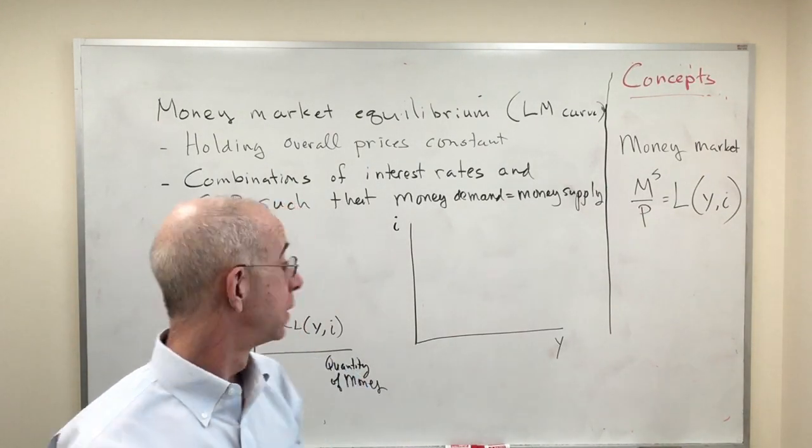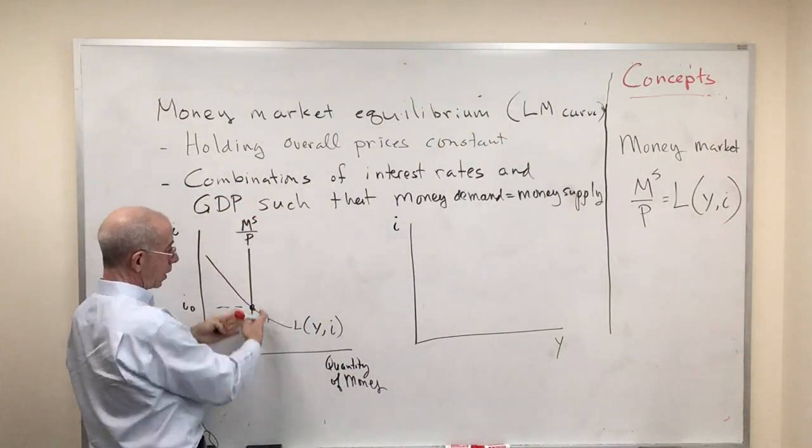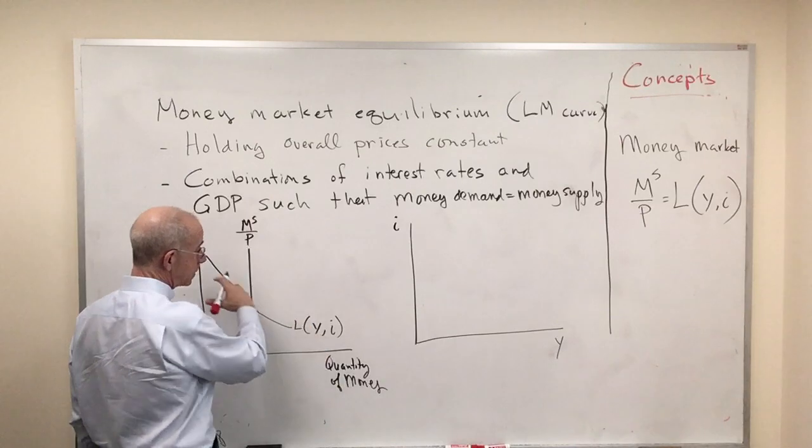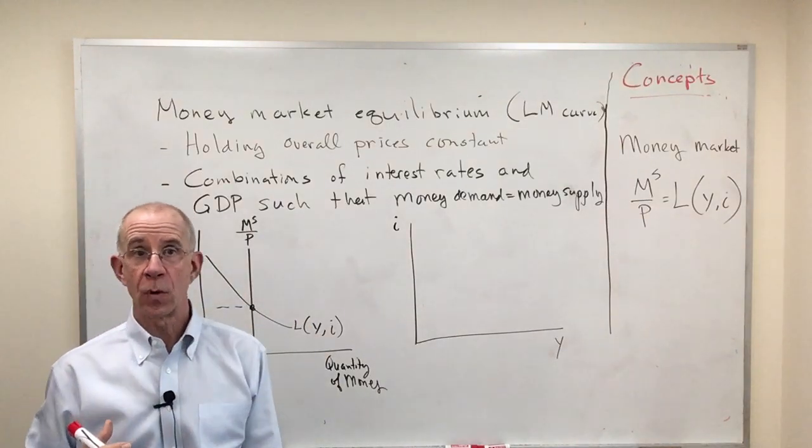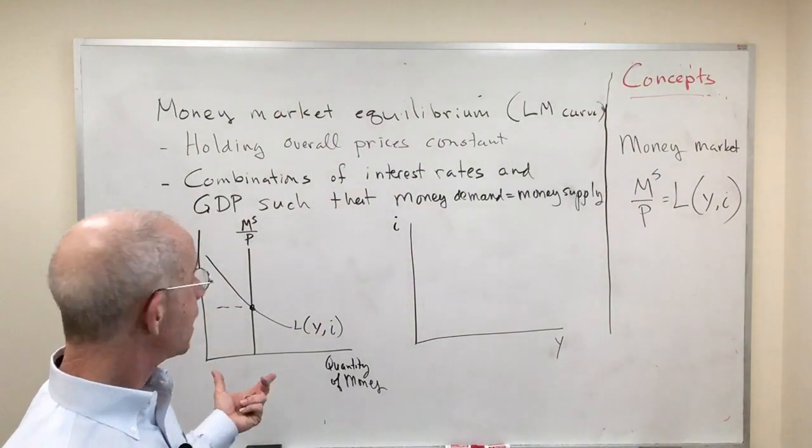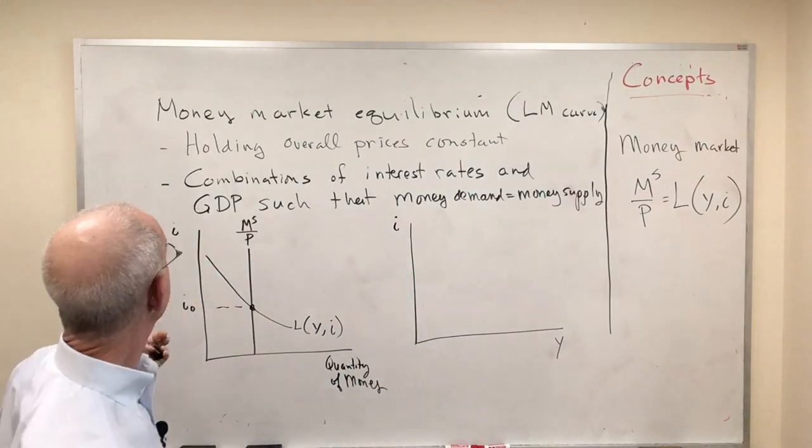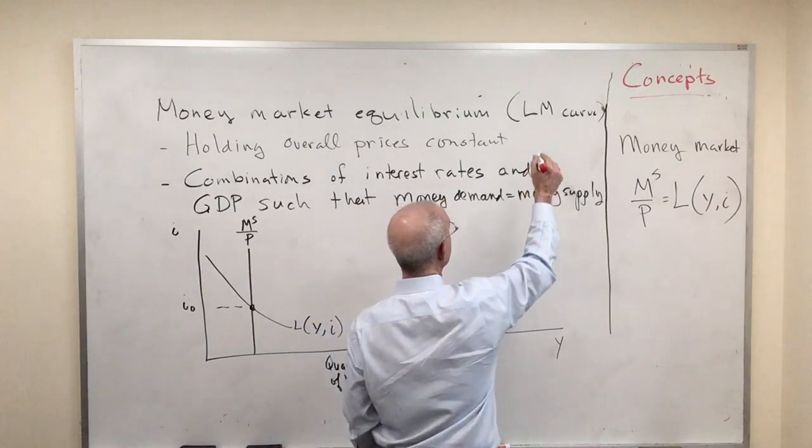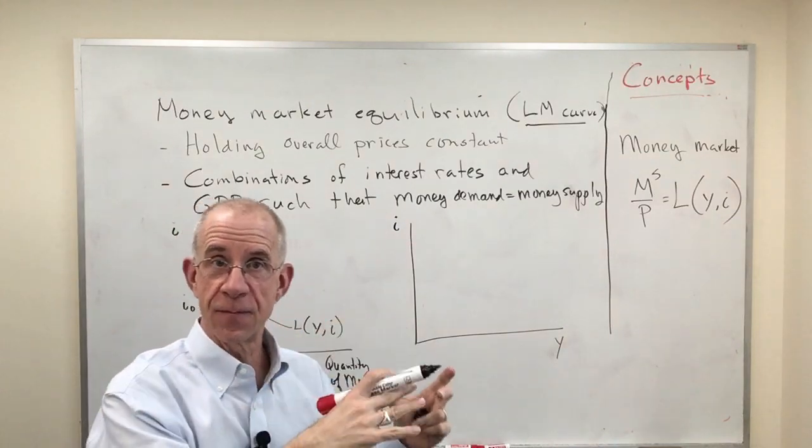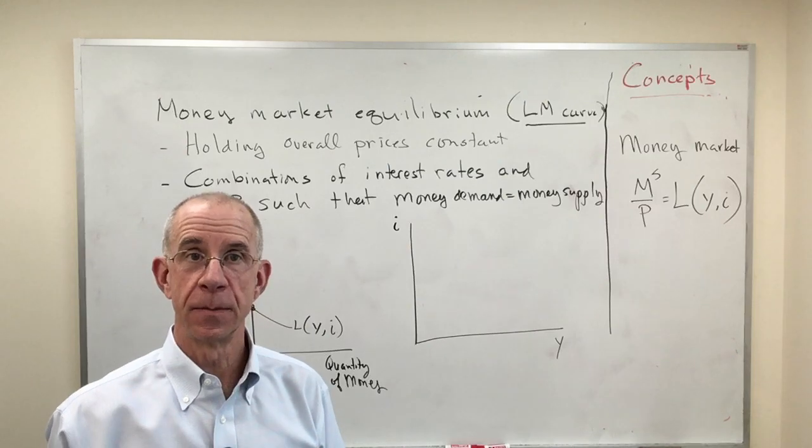Now we've done that before using the real money supply, the money supply adjusted for prices, and the demand curve for money, which we denoted as L. It's the combination of the demand for money and the supply of money which gives us this term LM. That's where L equals M, where the demand for money equals the supply of money. So it's a set of equilibrium relationships.